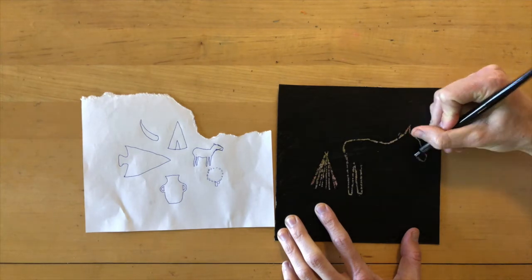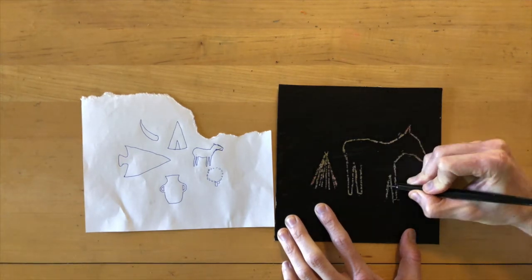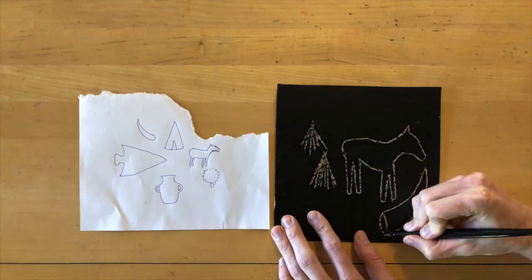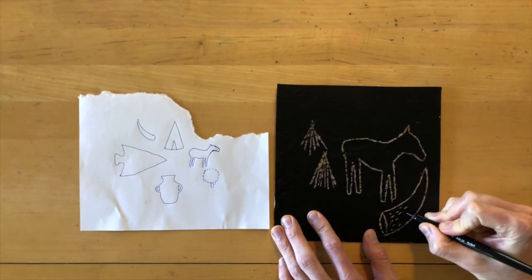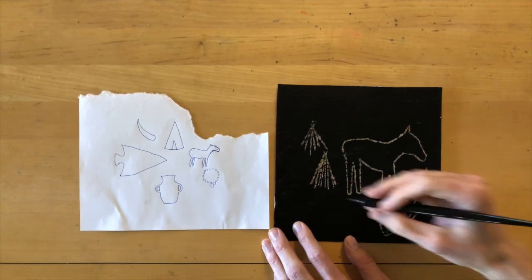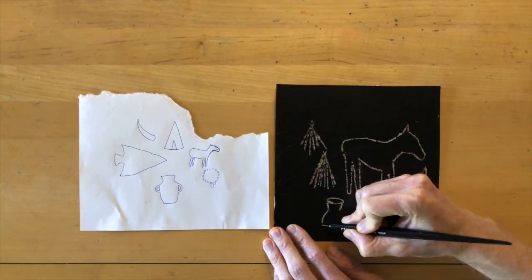The Comanches used teepees as their living structure. Horses were very important, buffalo as well. So I just sketched some of those quickly on a scrap sheet of paper and then began to scratch those into my ground. I used that as inspiration.